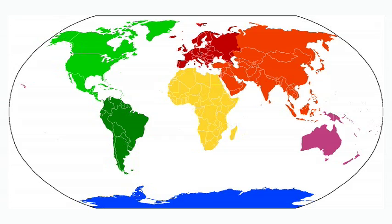There are seven continents on our planet. A continent is a large section of land that is separated from other areas of land.